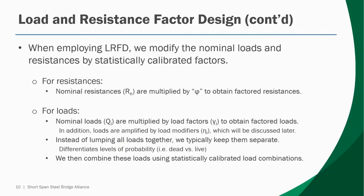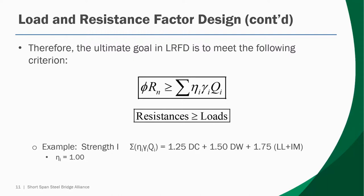When employing LRFD, we modify the nominal loads and resistance by statistically calibrated factors. Resistances are multiplied by resistance factors, or phi values, to obtain factored resistances, and loads are similarly multiplied by load factors to obtain factored loads. Instead of lumping all loads together before factoring, we typically keep them separate to differentiate the uncertainties associated with each load component. Dead loads and live loads have different uncertainties, so we use separate load factors. We then combine these loads using statistically calibrated load combinations. The goal is to test your design so that the factored resistance is greater than your specified load combination.